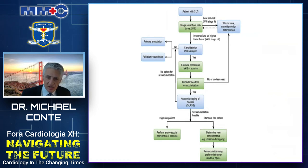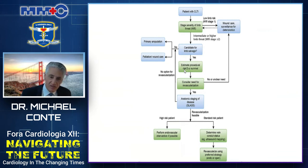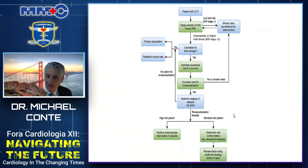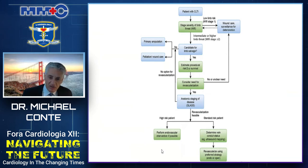This algorithm from the guideline outlines an approach to decision making for revascularization in CLTI. It begins with staging the severity of limb threat — those with low-risk limbs should undergo wound care, surveillance, and monitoring for deterioration. Those with higher grades should be considered for limb salvage, starting with an estimation of their procedural risk and survival. If they are candidates for revascularization, anatomic imaging and staging using the GLAS system follows. In standard-risk patients, availability of vein conduit for bypass is considered, whereas in high-risk patients, endovascular intervention is preferred if possible.